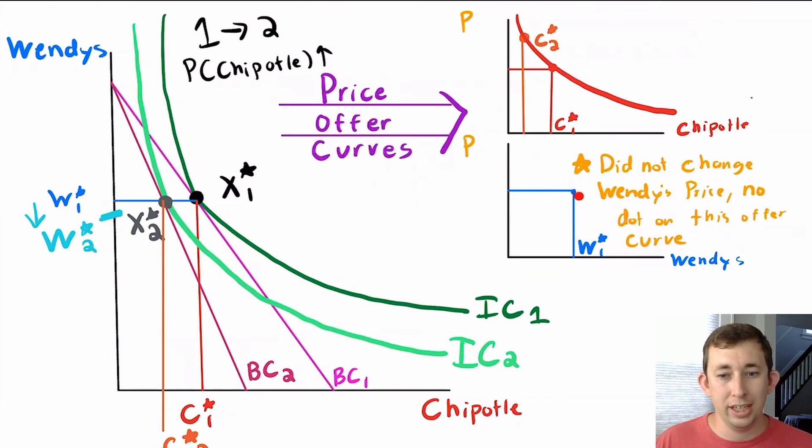I'm not putting that point on the Wendy's price offer curve. The Wendy's price offer curve only gets a new dot if I change the budget constraint by changing the price of Wendy's and leaving the price of Chipotle the same.